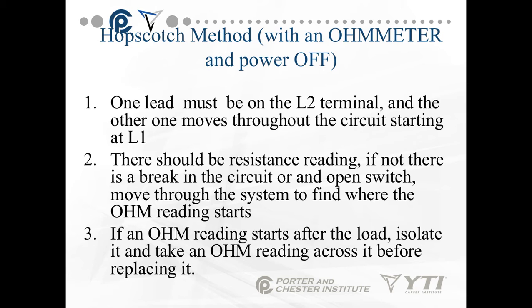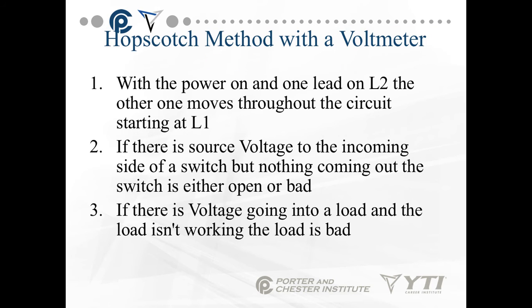If an ohm reading starts after a load, isolate it and take an ohm reading across it before replacing it. With the hopscotch method using a voltmeter, with power on, carefully move one lead onto the L2 terminal and the other through the circuit starting at L1. If there's source voltage to the incoming side of a switch but nothing coming out, that switch is either open or bad — and this includes contacts, pressure switches, or anything that controls the flow of current. If there's voltage going into a load and the load isn't working, the load is bad.